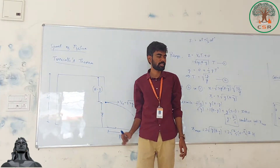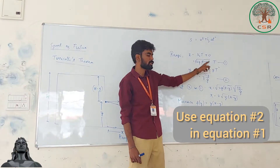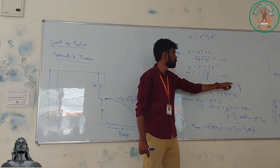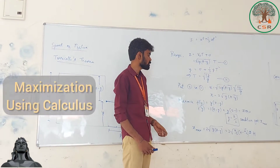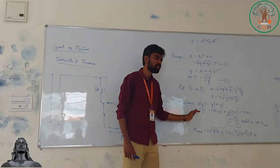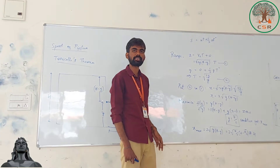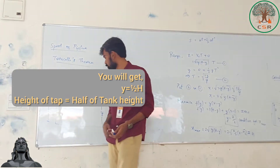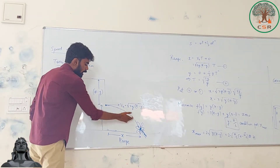Using both equations together, we get x equal to root of 2g(h minus y) into t, where t equals root of 2y by g. Simplifying, x equals 2 times root of y(h minus y). Now we maximize the function f(y) equal to y(h minus y). Setting f'(y) equal to zero and solving gives y equal to h by 2, meaning the tap should be at height h/2 from the bottom for maximum range.